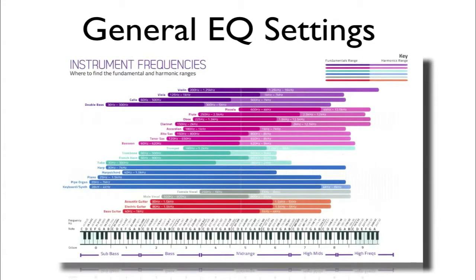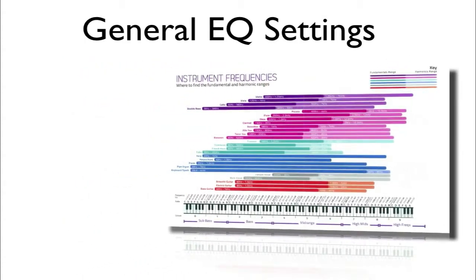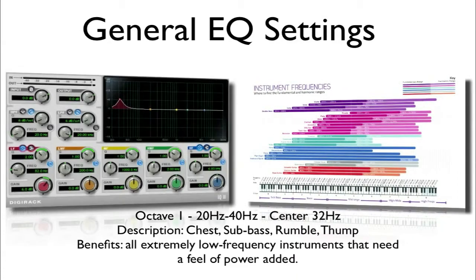Now let's go over some general EQ settings. This is solely going to be a reference point and not a guide for every single mix. Octave 1, 20 Hz through 40 Hz with a center point of 32 Hz, gives you a chest thump, sub bass, rumble, or thump — an extremely low frequency. This is great for extremely low frequency instruments like kick drums, bass, and organs that need more feel and power.